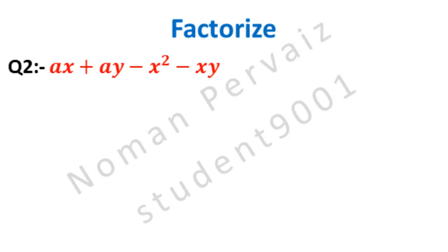We are asked to factorize, and question number 2 is: AX plus AY minus X square minus XY. Let's see its solution.